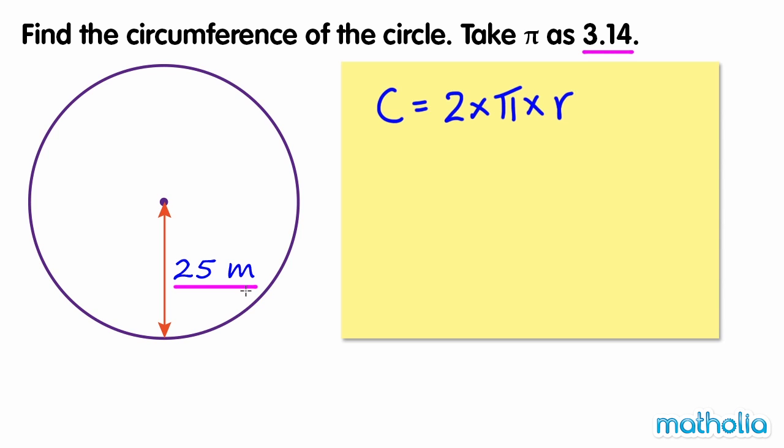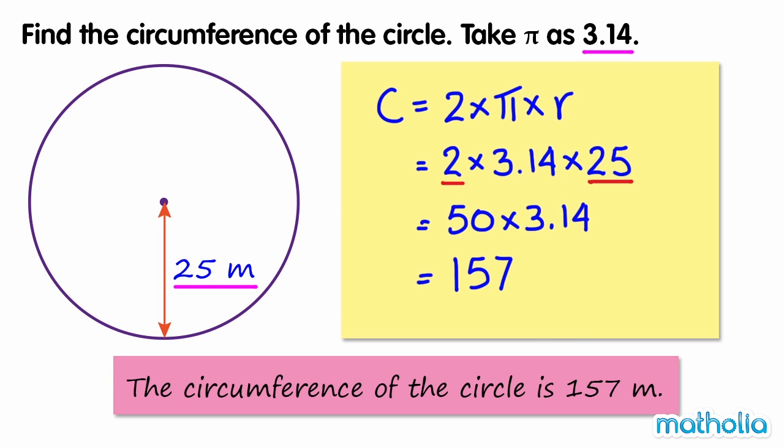This circle has a radius of 25 m, and pi is taken as 3.14. 2 times 3.14 times 25 is equal to 50 times 3.14, which equals 157. So the circumference of the circle is 157 m.